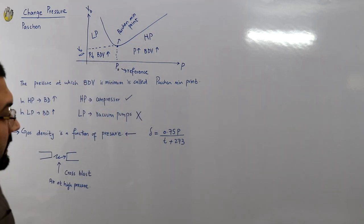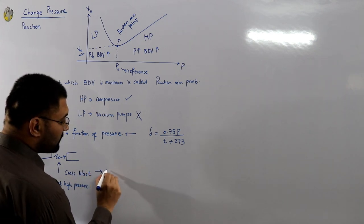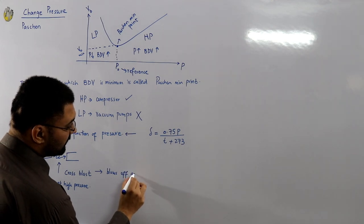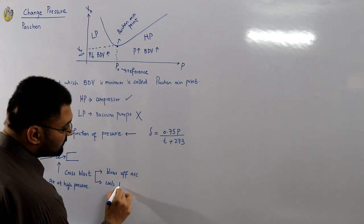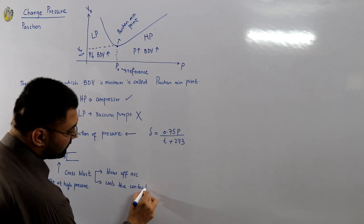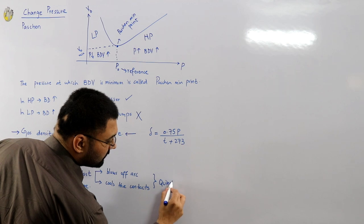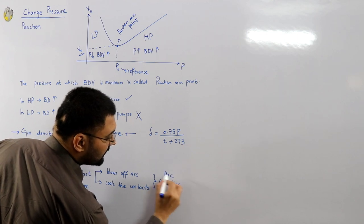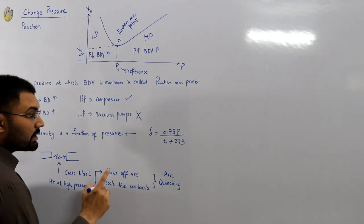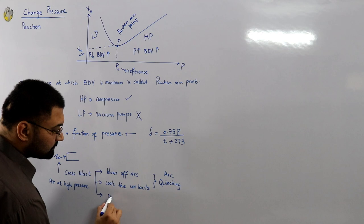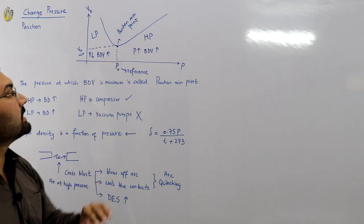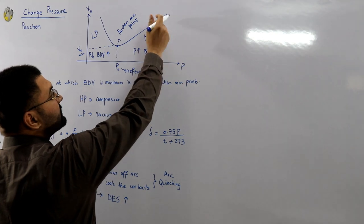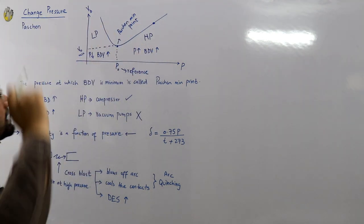This high pressure air does three things. Number one, it blows off the arc — cuts it into fragments and blows it off. This is called arc quenching. Number two, it cools the contacts. Number three, it increases the dielectric strength, because of the high pressure. So you are injecting this pressurized air in the high pressure region, which increases the dielectric strength as well.